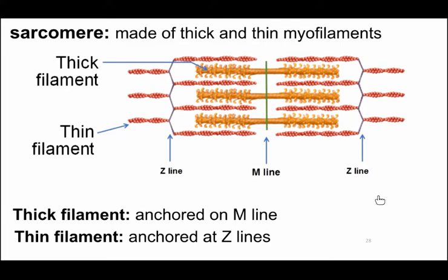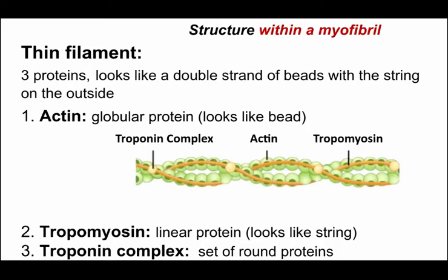Part of the reason for giving you all this detail is that you really need it to understand the mechanism by which muscles shorten, and without shortening you don't get movement. The thin filament is made of three different proteins, the most numerous of which is a globular protein called actin.